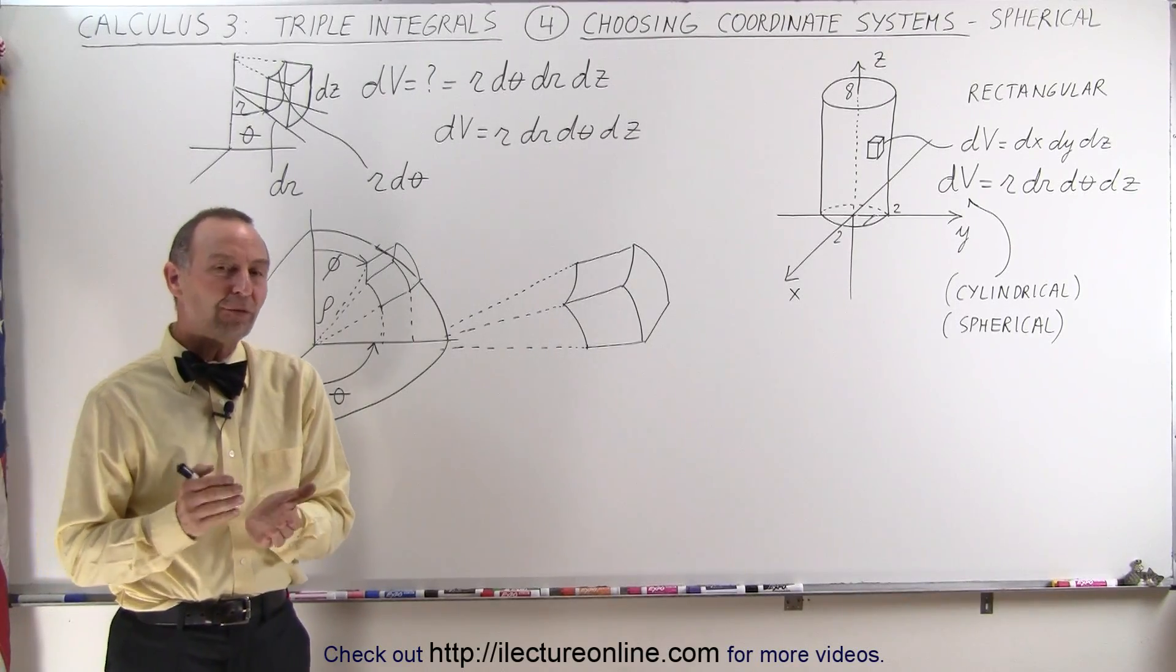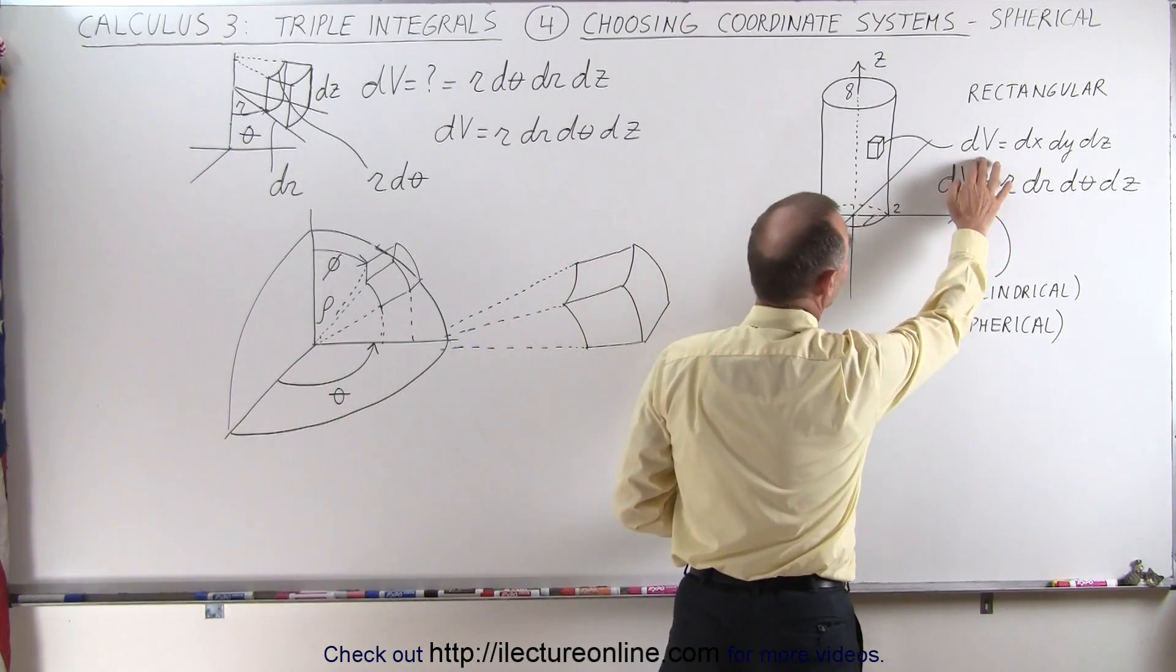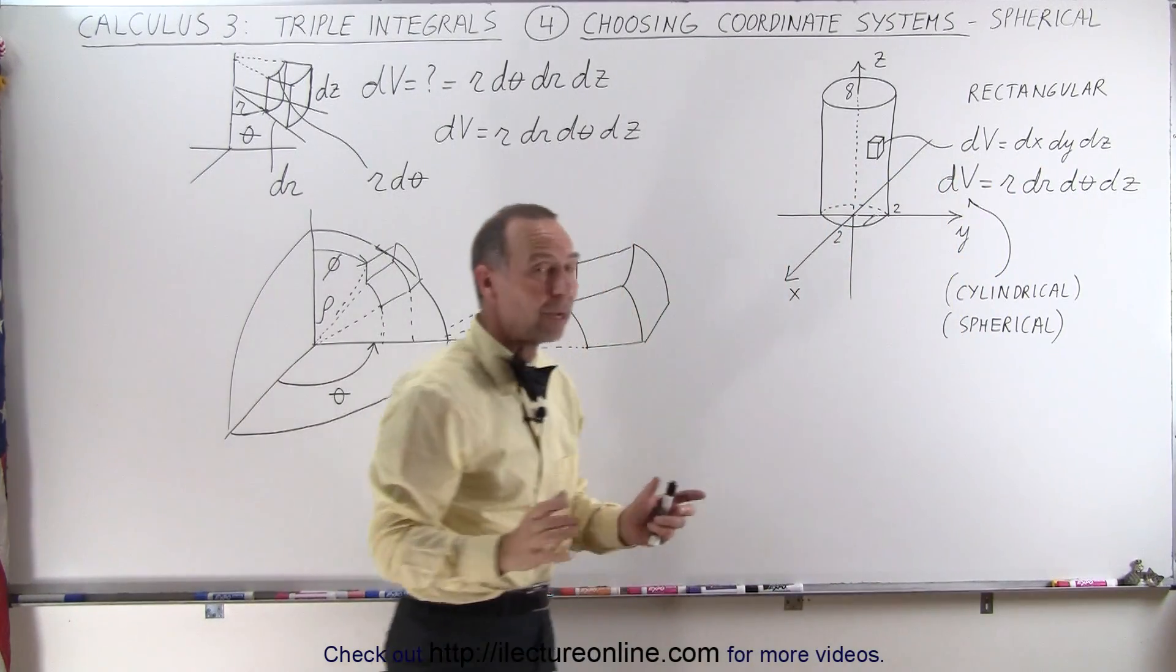Welcome to ElectronLine. So far we've seen that in rectangular coordinate systems our volume element is simply dx dy dz because it's a rectangular box.